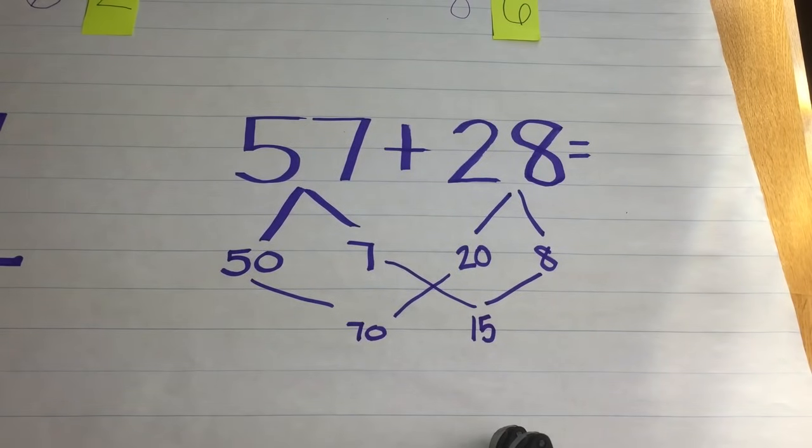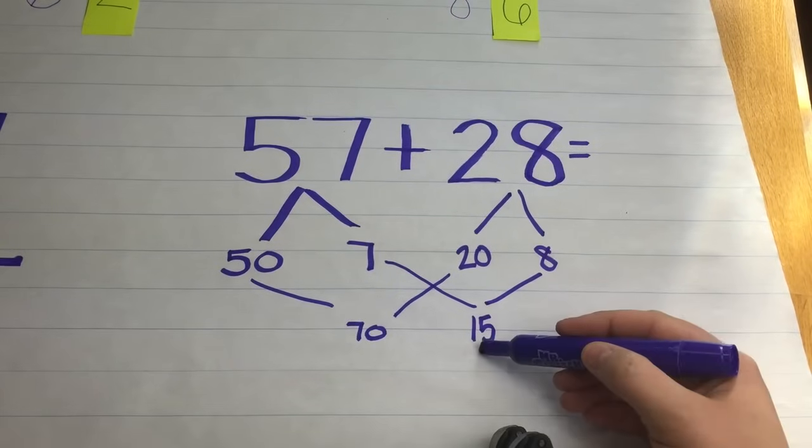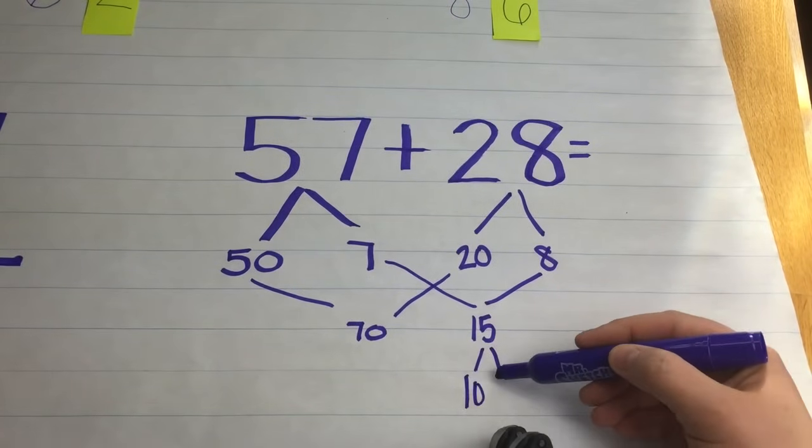As you can see, we still do not have a nice even round number, so we're going to take that 15 and break it down one more time to 10 and 5.